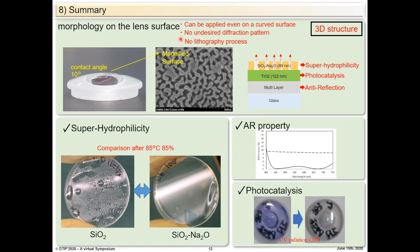To summarize, we could successfully develop the AR coating with superhydrophilicity and photocatalysis effect. It is applicable even to curved surfaces of lenses without a lithography process. Since it is a random pattern, we don't have undesired diffraction patterns of light. Thank you so much for your attention.